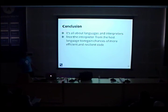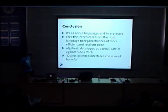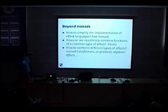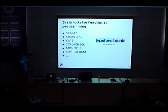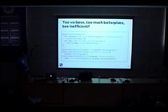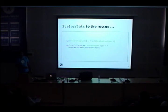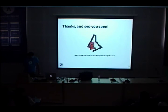In conclusion, it is all about languages and interpreters — defining languages that allow us to decouple the definition of our effects from their interpretation. This frees the interpreter from the host language and gives us chances to execute using asynchrony and other optimizations, while decoupling the impure part from the pure part. Object-oriented interfaces can be considered harmful in this regard. Beyond monads, there is much more to learn — free monads, Coyoneda, monad transformers, and so forth. Libraries like Scalaz and Cats give you a lot of these things for free. There is also a very good book on functional programming to learn more.